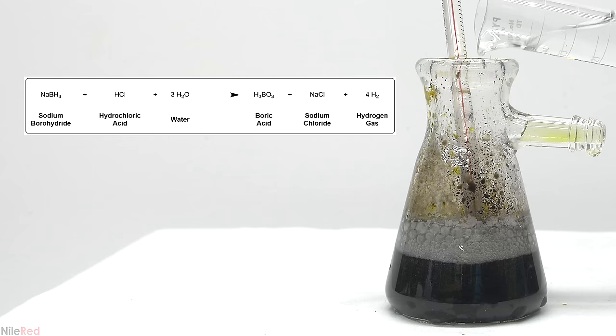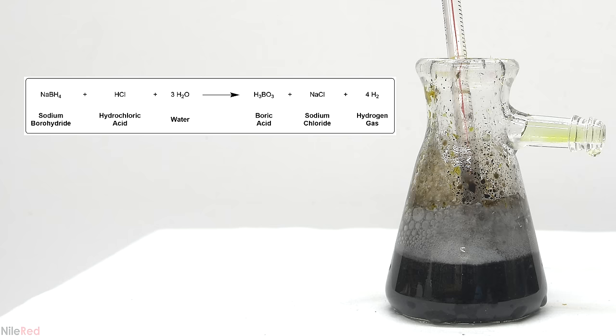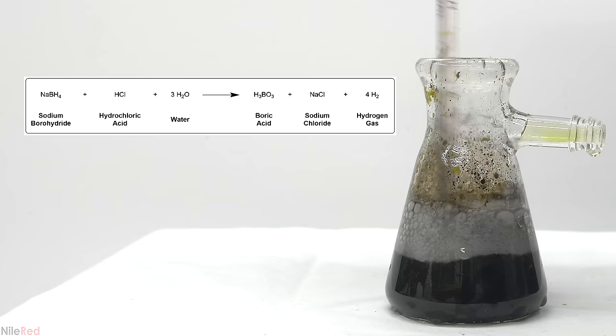Sodium borohydride is pretty stable under basic conditions but it quickly decomposes with acids. As it decomposes it produces boric acid as well as hydrogen gas which you can see bubbling off. It's very important to add the acid slowly otherwise the bubbling could get out of control.